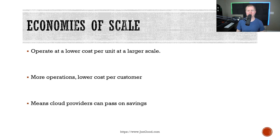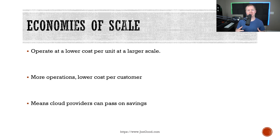Now let's talk about economies of scale. What is economies of scale? Think of it this way — the larger you get, the ability you have to lower your cost per unit. Think about these cloud service providers — they are massive. They have these big data centers. As they get larger, they can handle more customers, and the data per customer goes down. So these cloud providers, assuming they do this, they can pass on the savings to you as a customer.